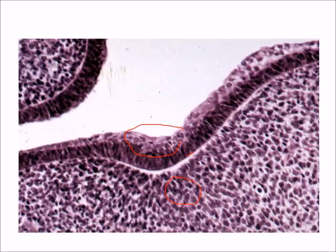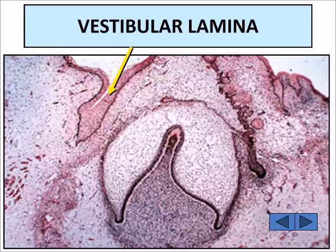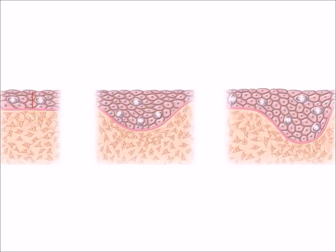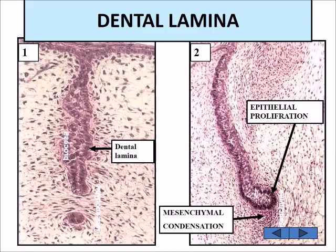The epithelium is separated from the mesenchymal tissue by a cell-free zone and a basement membrane. You can see the vestibular lamina and the disintegration of the center part of the vestibular lamina giving us the vestibules. There is condensation of the ectoderm, a basement membrane with a cell-free zone, and condensed mesenchymal tissue at the areas where the teeth will appear in both the upper and lower jaw. Mitotic activity is responsible for the increase in thickness of the primary epithelial band.